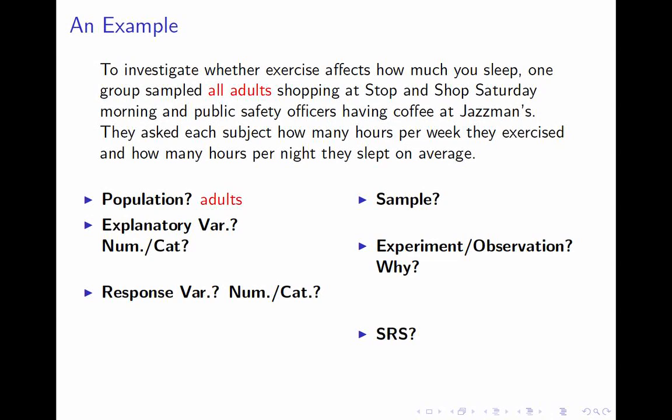What is the explanatory variable, and is it numerical or categorical? The explanatory variable — the thing doing the affecting — is the number of hours per week you exercise. If you ask each individual how many hours a week they exercise, the answer is a number, so it's numerical. If you are confused, always think about what the population is first, and therefore what an individual is. Once you know individuals are people, ask yourself what pieces of information you're gathering about each person — then it's usually clear.